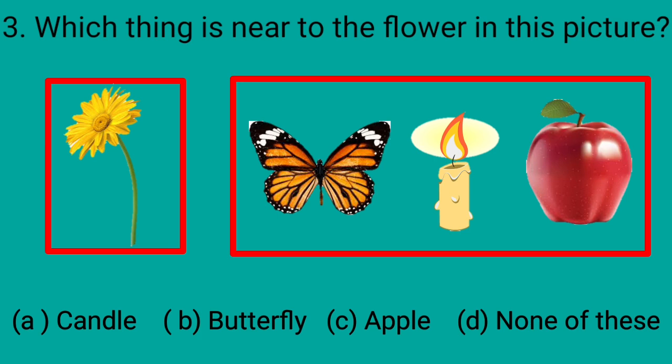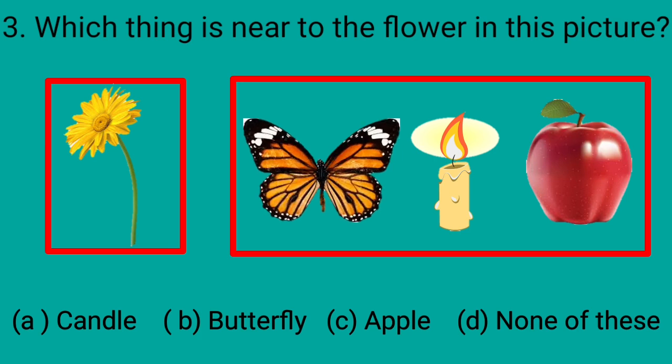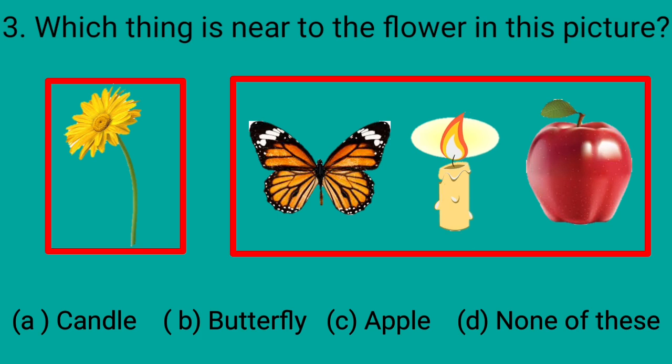Here we can see some things in a box near a flower. See these things and then find out the thing which is near to the flower. Let's start now. The first thing in the box is a butterfly. Then there is a candle. And the third one is an apple.